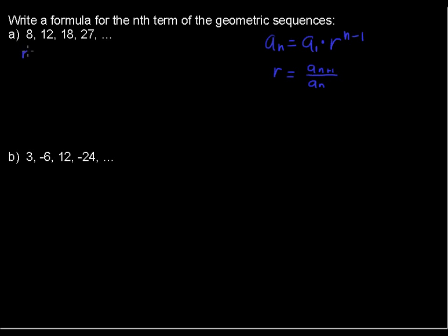So for example, in our example, r equals, let's just take the first two terms, one of the terms divided by the one right before it. So 12 divided by 8, or that simplifies as 3 over 2. So we have our ratio of 3 over 2, and we have that the first term is 8.